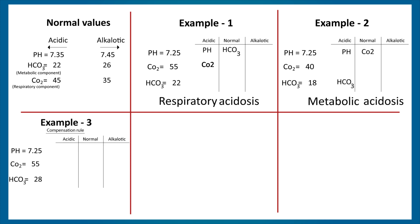Example three: pH is 7.25, CO2 is 55, and HCO3 is 28. pH and CO2 are both acidic, so this is respiratory acidosis. However, HCO3 at 28 has risen above the normal range into the alkalotic group, indicating that compensation has occurred. Because it has failed to bring the pH back to the normal range, this is a partially compensated respiratory acidosis. It would be called fully compensated if the pH were in the normal range.